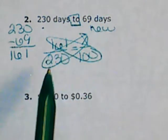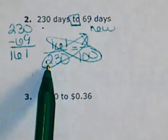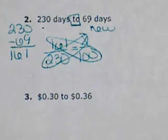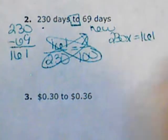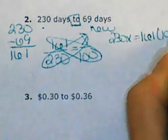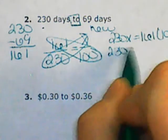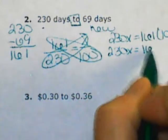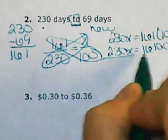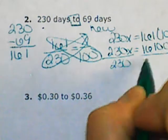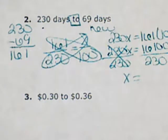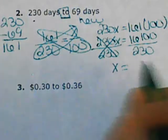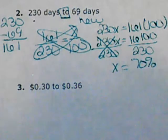Set up your equation: 161 over 230 equals x over 100. When you cross-multiply, you get 230 times x equals 161 times 100, which gives 230x equals 16,100. Divide both sides by 230, and x equals 70%.